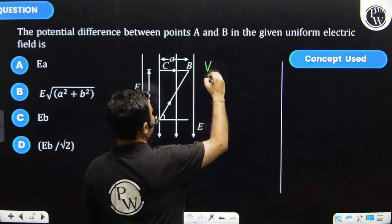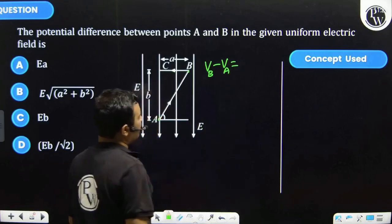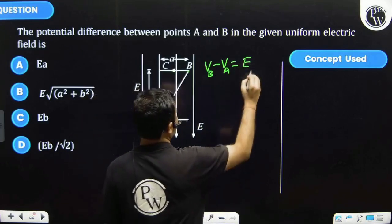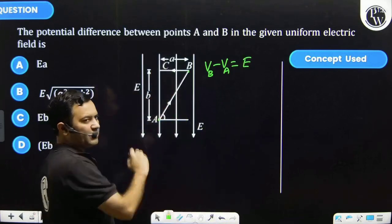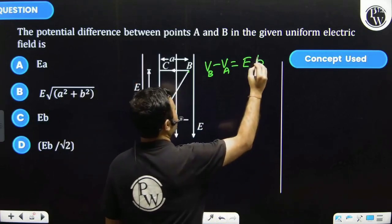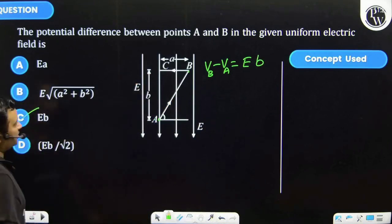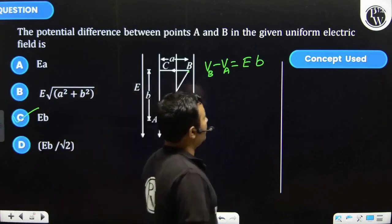And that will be equal to electric field E multiplied by displacement in the direction of the electric field, that is b. So our correct answer would be C.